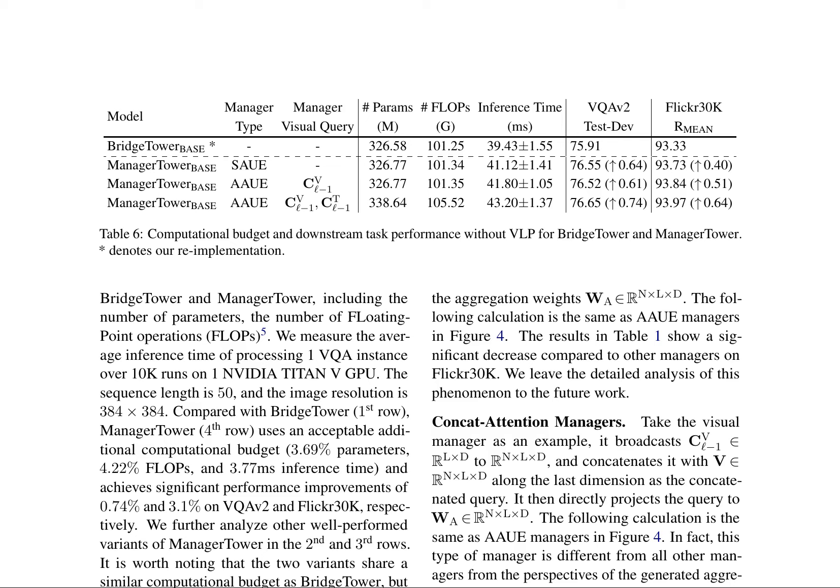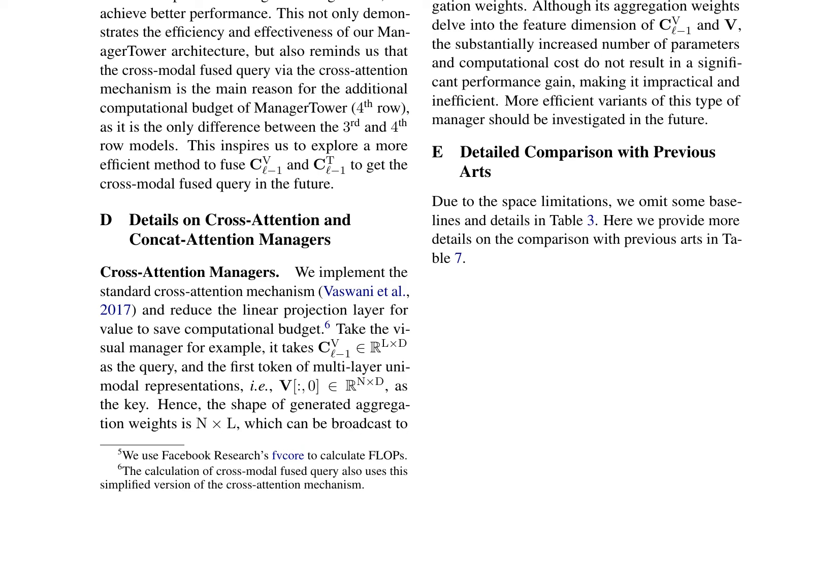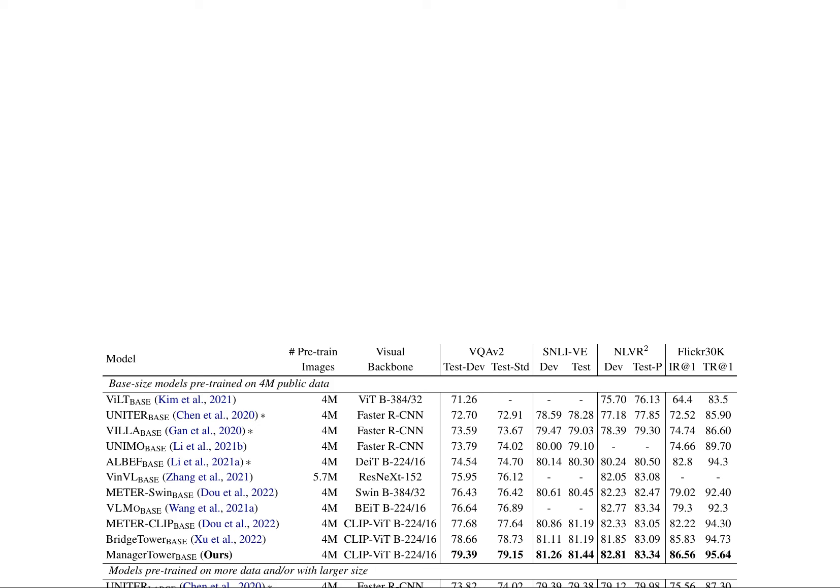The authors present a comprehensive analysis of their proposed Manager Tower architecture, which achieves significant performance improvements compared to the baseline BridgeTower model. The Manager Tower model uses an additional computational budget to fuse the cross-modal query via cross-attention mechanism, resulting in a 0.74% and 3.1% improvement on VQA V2 and Flickr 30K, respectively. The cross-attention mechanism reduces the linear projection layer for value to save computational budget, while the concat attention manager broadcasts the query to the concatenated query to generate aggregation weights. Although the concat attention manager increases parameters and computational cost, it does not result in significant performance gains, making it impractical.